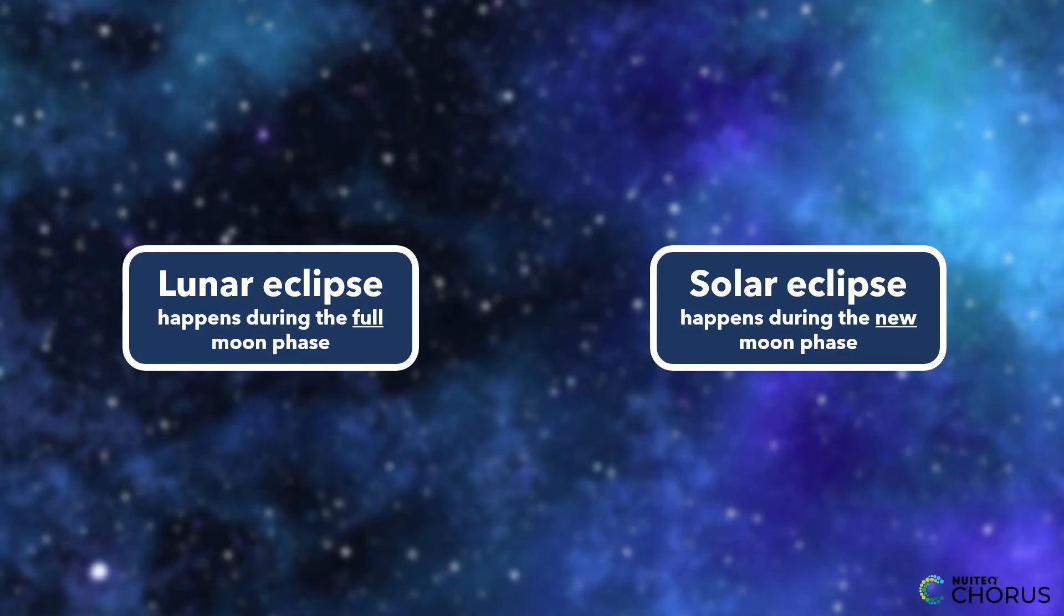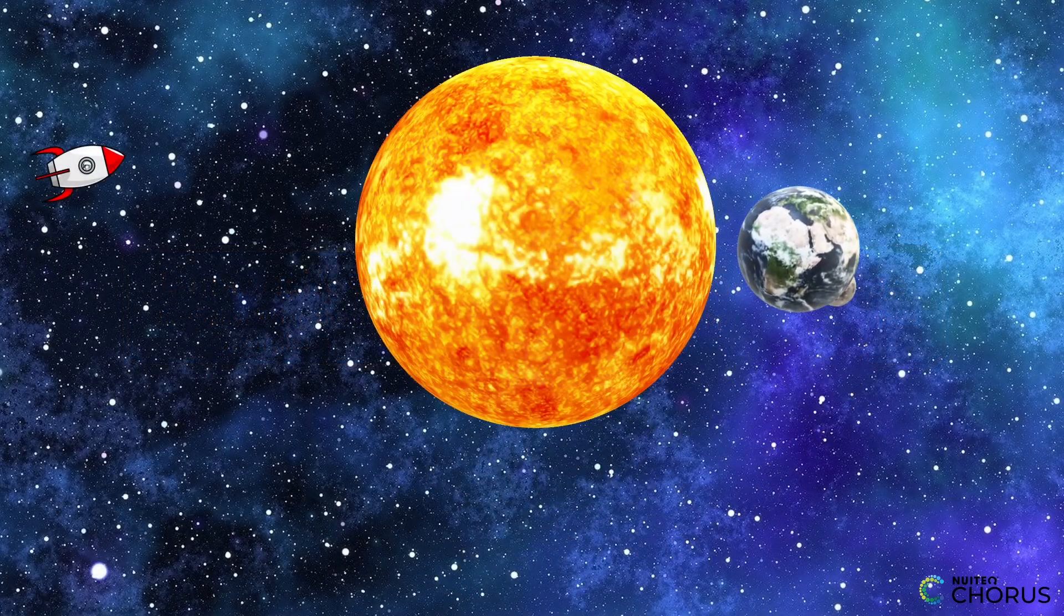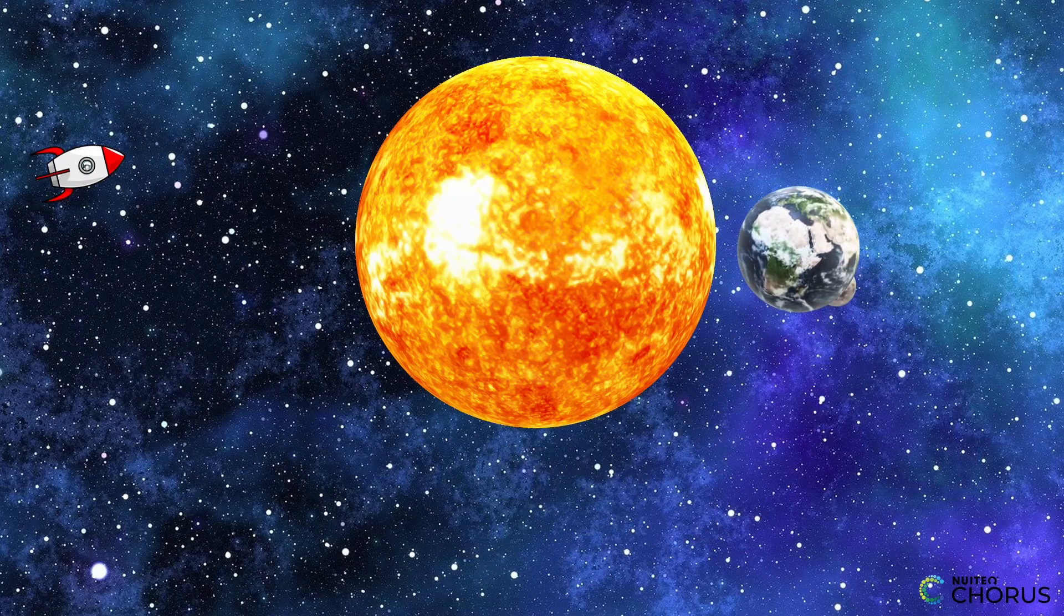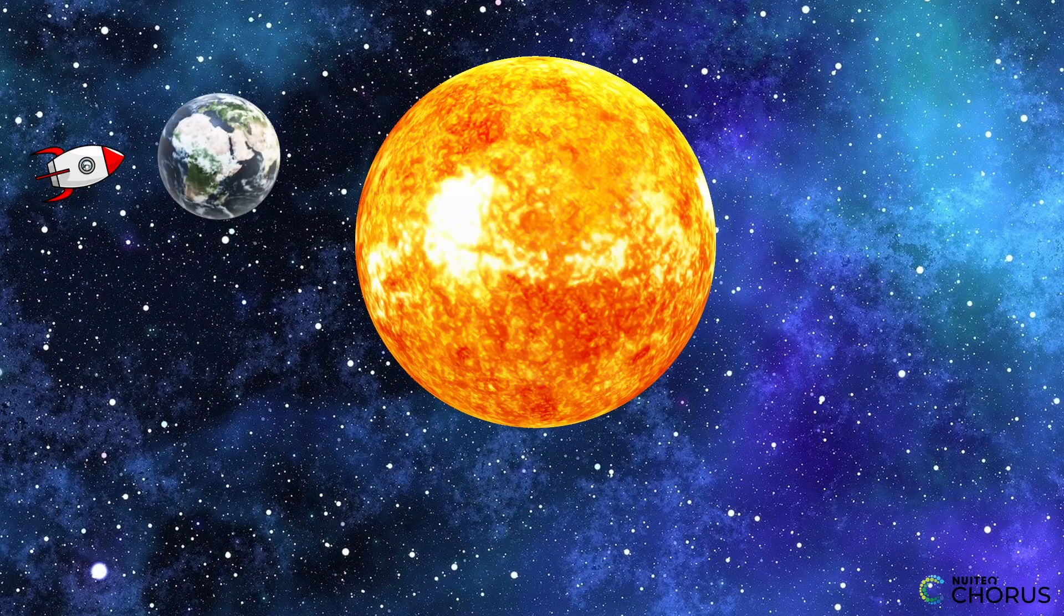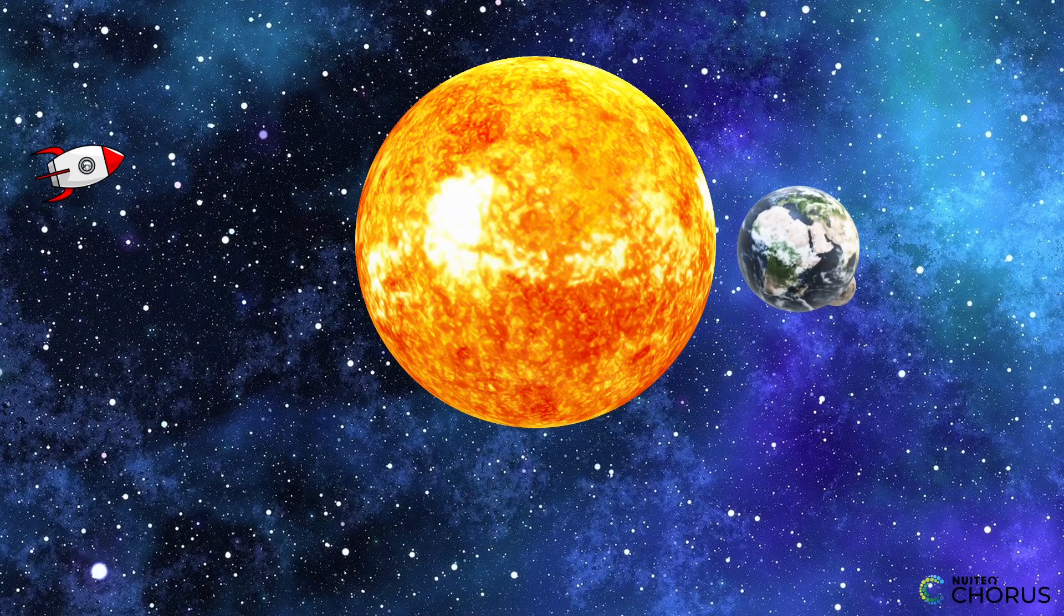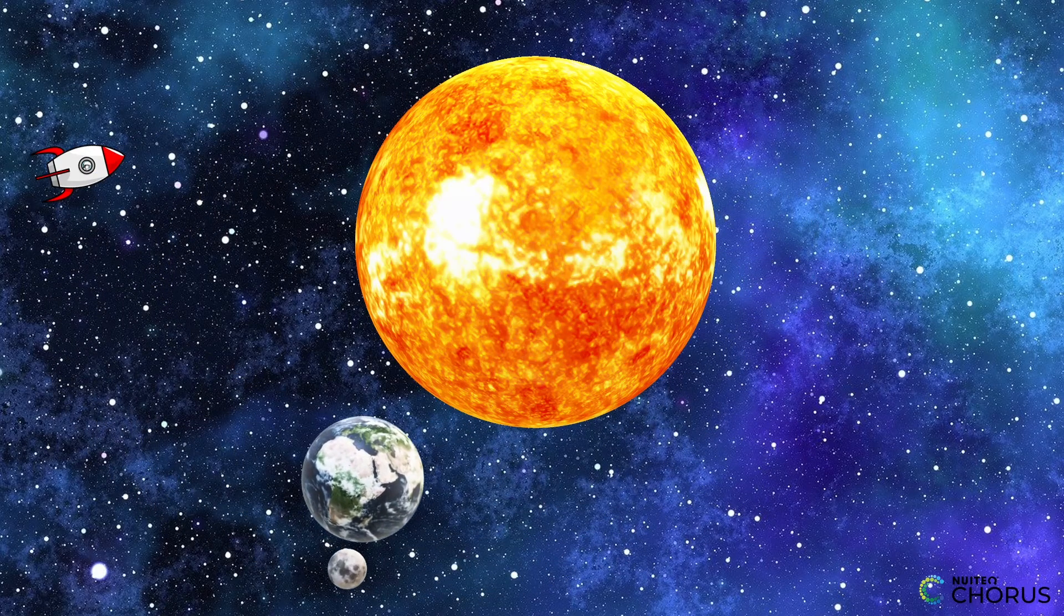So, that's the Earth, Sun, Moon system in a nutshell. The Earth spinning and going around the Sun, the Moon going around the Earth, the changing seasons, and the lunar and solar eclipses. Pretty cool, right? Like a cosmic dance.